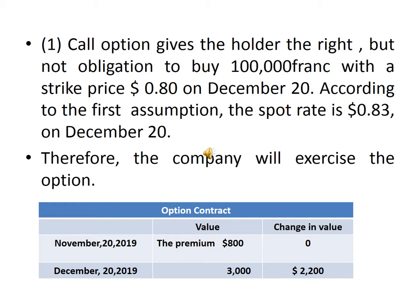The call option gives the holder the right but not the obligation to buy 100,000 francs at a strike price of $0.08 on December 20. According to the first assumption, the spot rate is $0.83 on December 20, therefore the company will exercise the option, because it can purchase 100,000 francs at $0.08 while the market price is $0.83. The table summarizes the value: on November 20 the value is the premium of $800, increasing by December 20 to $3,000, a gain of $2,200.